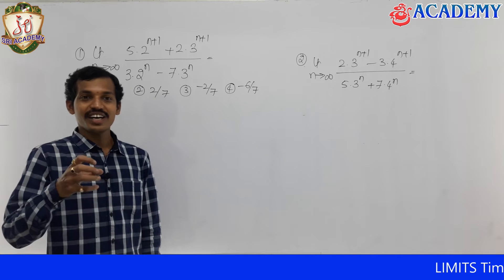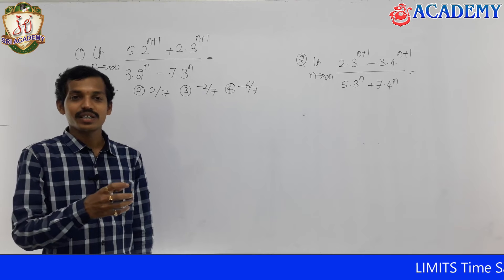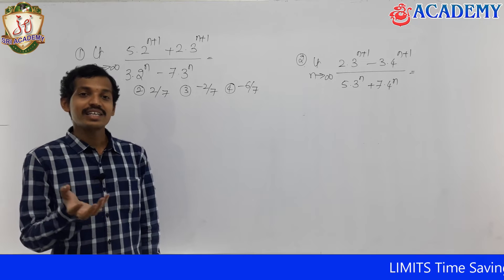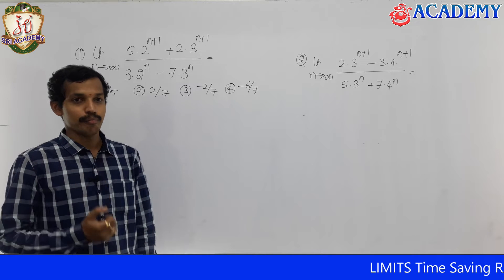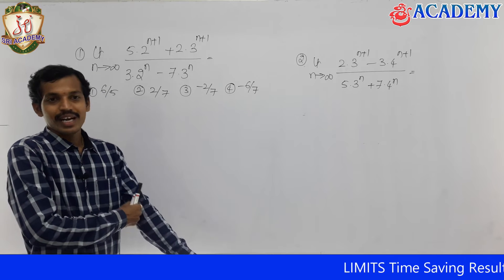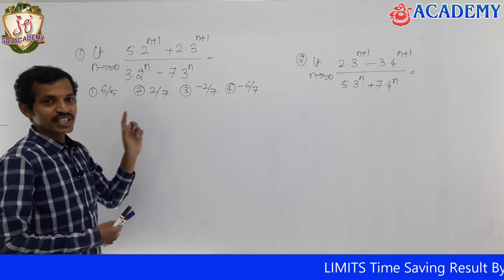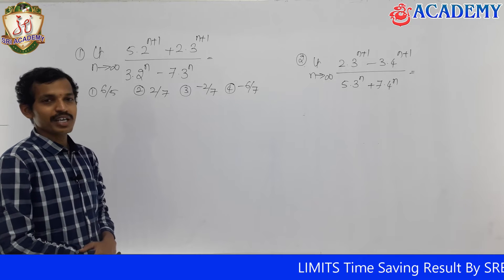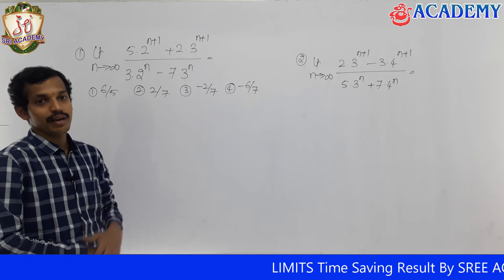First we will see how we are getting the answer with a simple trick, and we will see later the procedure of solving this problem. The question is: limit as n tends to infinity of [5 into 2 power n+1 plus 2 into 3 power n+1] divided by [3 into 2 power n minus 7 into 3 power n].